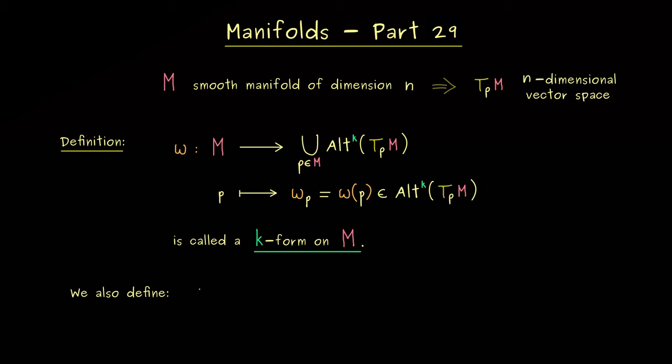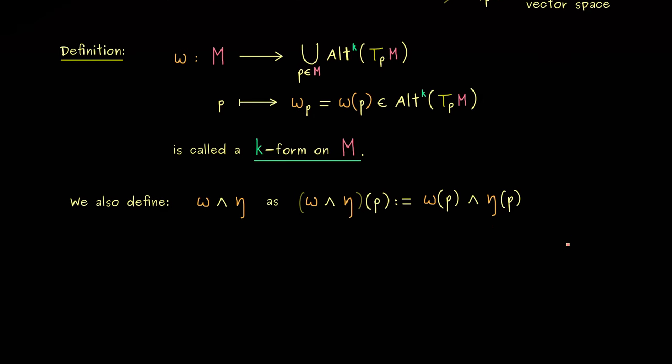And then it's also not surprising that we can also extend the wedge product. So here we can define omega wedge eta as a k-form on M. And as you might already expect, we can do this point-wisely. This means we just put in a point P and then we use the ordinary wedge product for k-forms. So we have omega of P wedge eta of P. Therefore, if omega is a k-form on M and eta an s-form on M, then omega wedge eta defines a k plus s-form on M. So you see, we can easily reuse all the definitions from multilinear algebra.